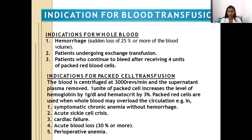Indications of packed cell transfusion: The blood is centrifuged at 3000 RPM and the supernatant plasma is removed. One unit of packed cell increases hemoglobin by 1 gram per deciliter and increases hematocrit by 3%. Packed red cells are used in symptomatic chronic anemia without hemorrhage, acute sickle cell crisis, cardiac failure, blood loss of 30% or more, and perioperative anemia.